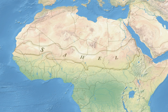The Sahel is the eco-climatic and biogeographic zone of transition in Africa between the Sahara to the north and the Sudanian savannah to the south. Having a semi-arid climate, it stretches across the south-central latitudes of northern Africa between the Atlantic Ocean and the Red Sea.